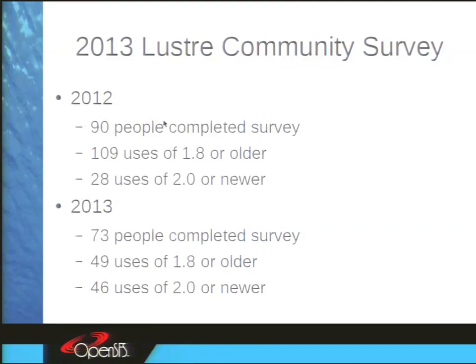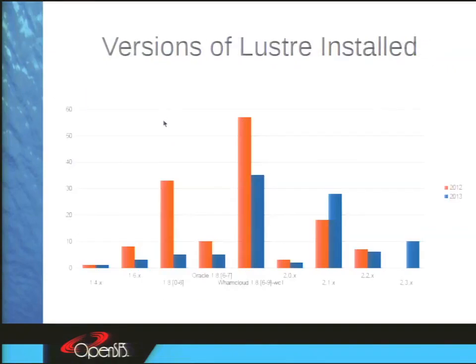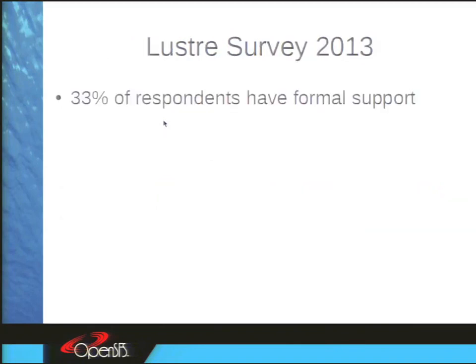In 2012, 1.8 was by far the most dominant version in use, with very little 2.1 usage. But in 2013, recent 1.8 releases and the 2.1 releases are the most common, and we're starting to see 2.3 usage taking off too. Interestingly, only about a third of all respondents have formal support contracts — others rely on community mailing lists. Very few people said they have no Lustre issues at all.